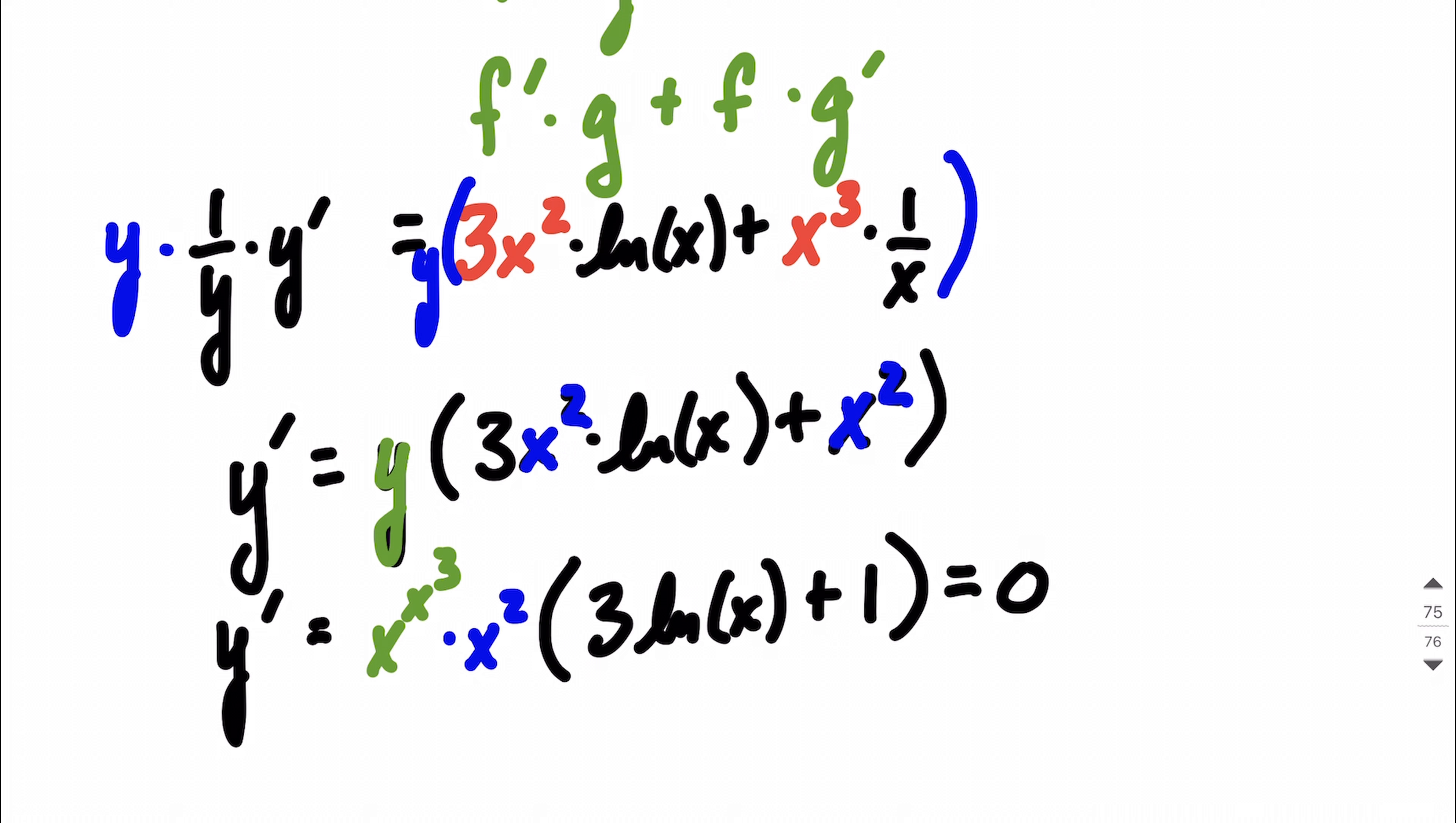Well, in our case, remember our restriction we put on our values of x. We said x has to be greater than 0 because our original function was exponential. So that means that our x raised to the x to the third power, that can't equal 0. So I'm not worried about this. The x squared can't equal 0.